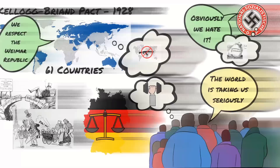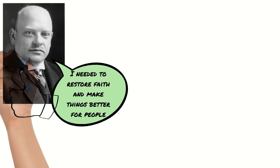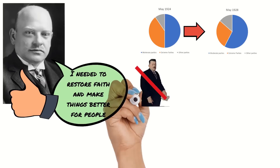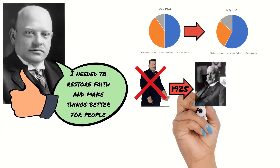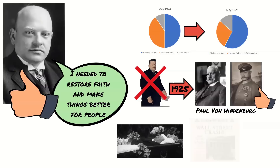Overall, Stresemann's aim was to restore faith in the Weimar Republic and reduce the hardships faced by German people, and in this he was very successful. The economic and foreign policies of the 1920s led to a reduction in support for the extreme parties from 40% in 1924 to 28% in 1928. When President Ebert died in 1925, he was replaced by Paul von Hindenburg — a moderate, but also the former Field Marshal of the Kaiser's Army — which pleased moderates and those who saw Ebert as one of the November criminals who had betrayed Germany by surrendering in World War I. However, disaster struck in 1929 when Stresemann died of a heart attack in October at just 51 years of age. His death was quickly followed by a world economic crisis which would change everything.